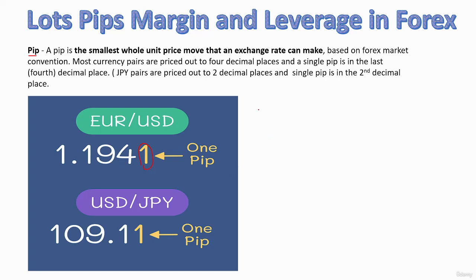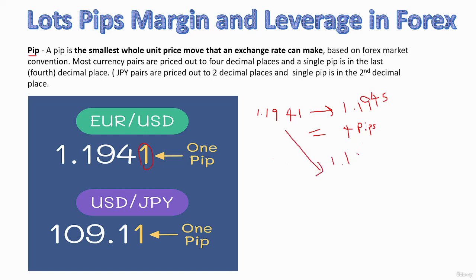Imagine the starting price of EURUSD is 1.1941. After one hour it has moved to 1.1945 — the difference is 4 PIPs. Now imagine it has moved to 1.1953 — the difference is 12 PIPs.